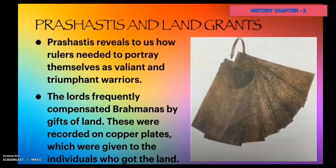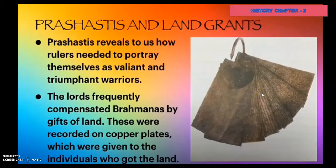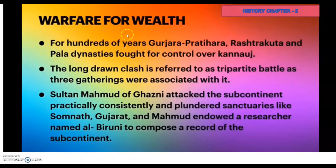This is a set of copper plates recording a grant of land made by a ruler in the 9th century, written partly in Sanskrit and partly in Tamil. The ring holding the plates together is secured with the royal seal to indicate that this is an authentic document. Prashastis reveal to us how rulers needed to portray themselves as valiant and triumphant warriors. The lords frequently compensated Brahmanas by gifts of land, recorded on copper plates, which were given to the individuals who received the land.